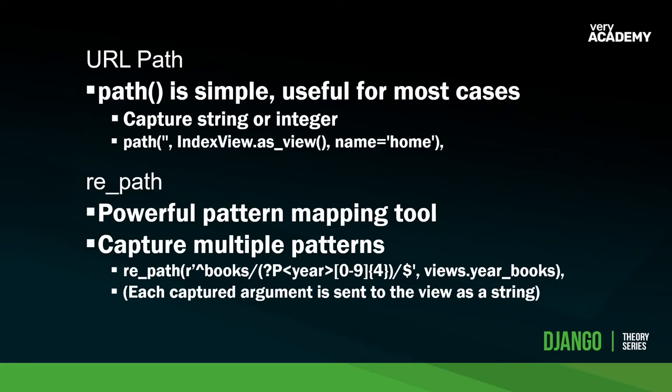I'm going to make the assumption that you know what a URL path is in Django, or at least you've utilized a URL path in Django. You can see an example here: `path()`, then you point it to your view, and then you might give it a name. This is really quite simple and it's useful for most cases.